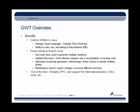That shows a real obvious benefit to GWT, but what are some of the other benefits? Well, the code is written in Java, so we're going to get all of the benefits of writing in Java. It's a strongly typed language. We'll have compile-time checking. We'll also have the ability to code, test, and debug in fully featured IDEs. Also, as I just showed you with that matrix of different generated variations, we are able to write our code with fewer needs to actually branch that code on our own. We write one code base and generate multiple variations from that single code base.